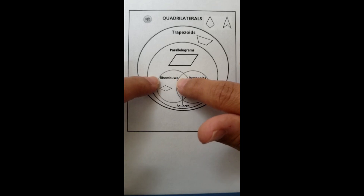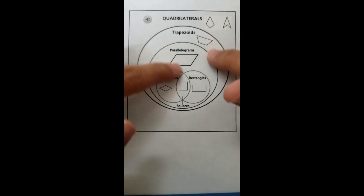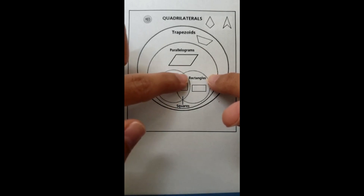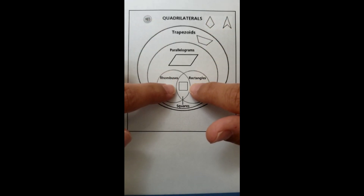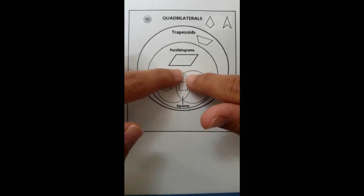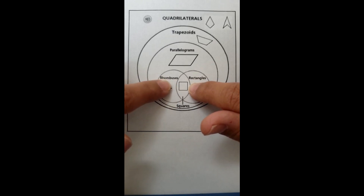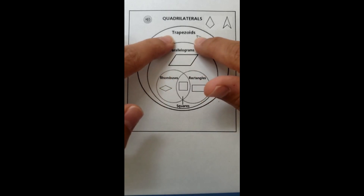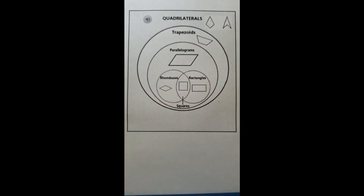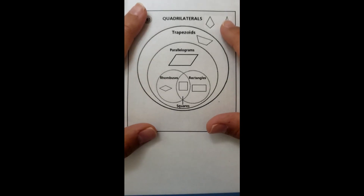A rhombus can be classified as a rhombus, a parallelogram, a trapezoid, and a quadrilateral. A rectangle can be classified as a rectangle, a parallelogram, a trapezoid, and a quadrilateral. The square sits inside the overlap between rhombuses and rectangles, so the square can be classified as a rhombus, a rectangle, a parallelogram, a trapezoid, a quadrilateral, and of course a square.